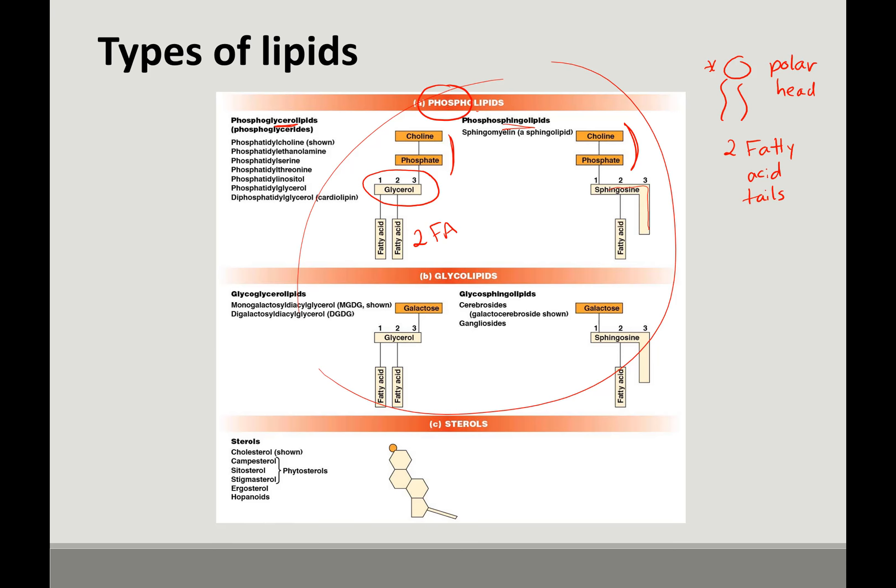Whereas sphingolipids have this sphingosine molecule as the backbone. And what I want you to understand is this is also a fatty acid tail. It's just already part of the sphingosine molecule. And then another, a second fatty acid tail, is added. So you still have a polar head and two fatty acid tails.